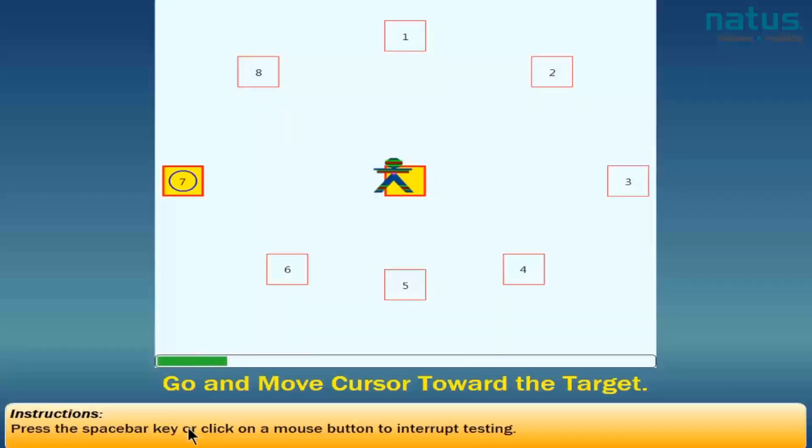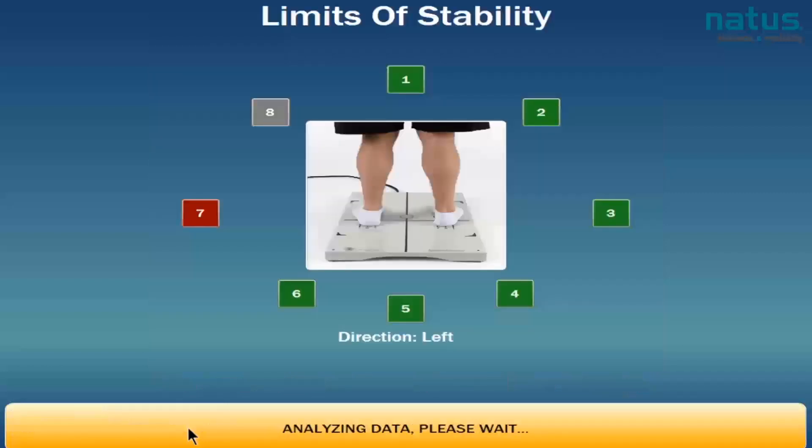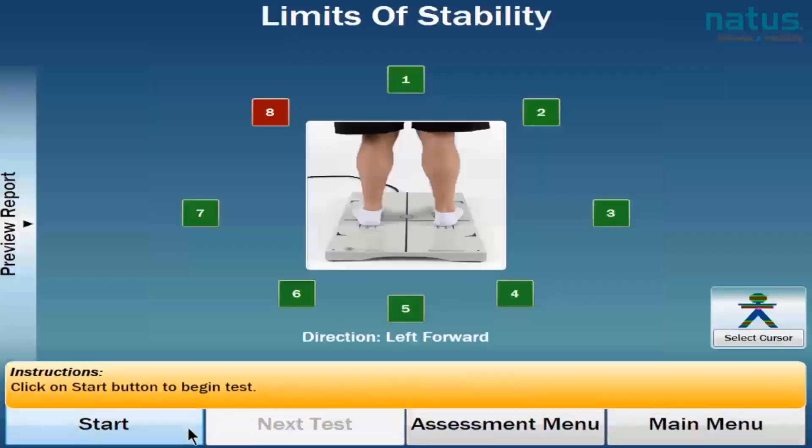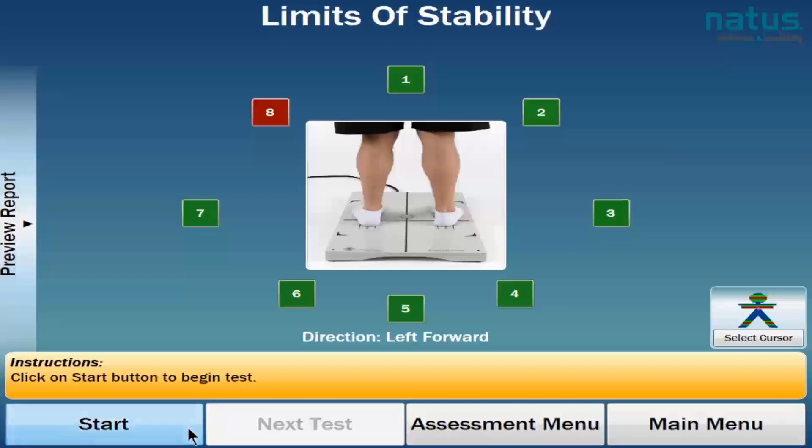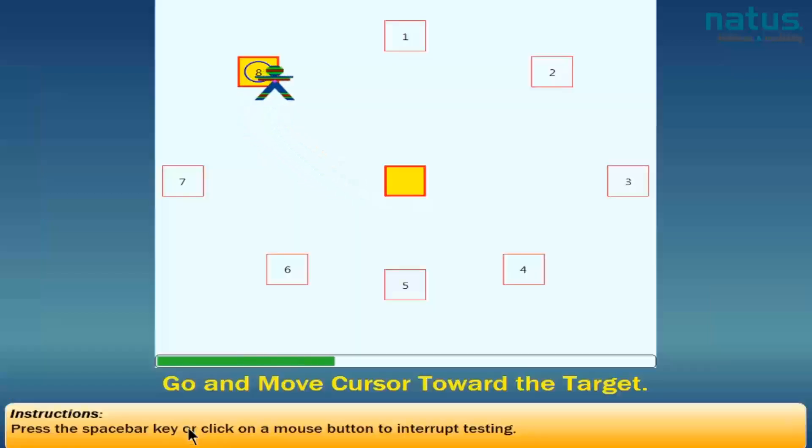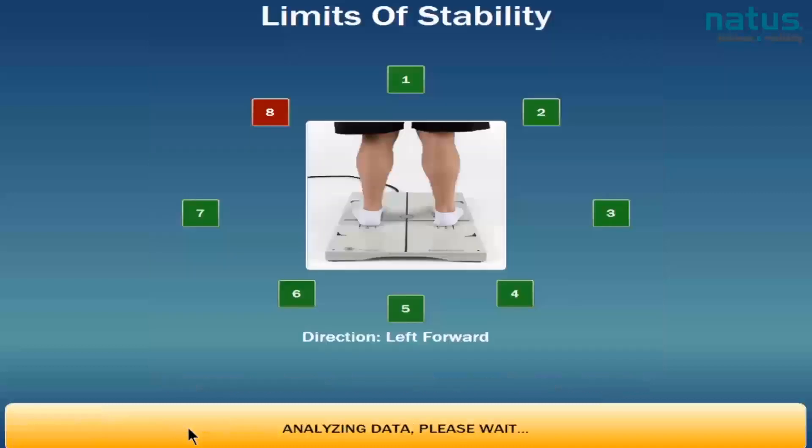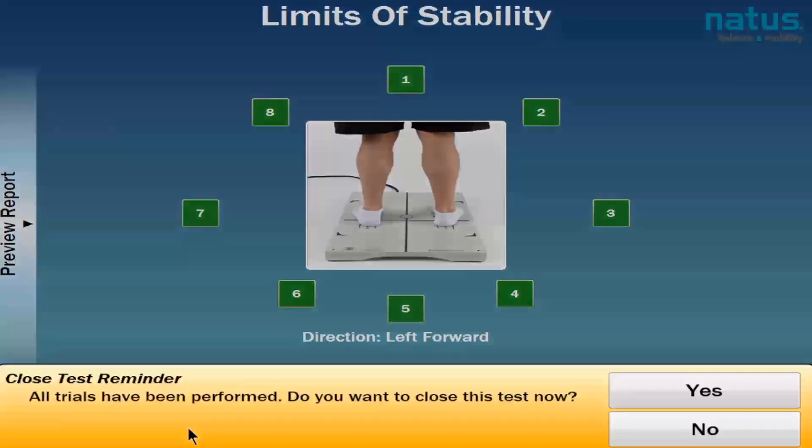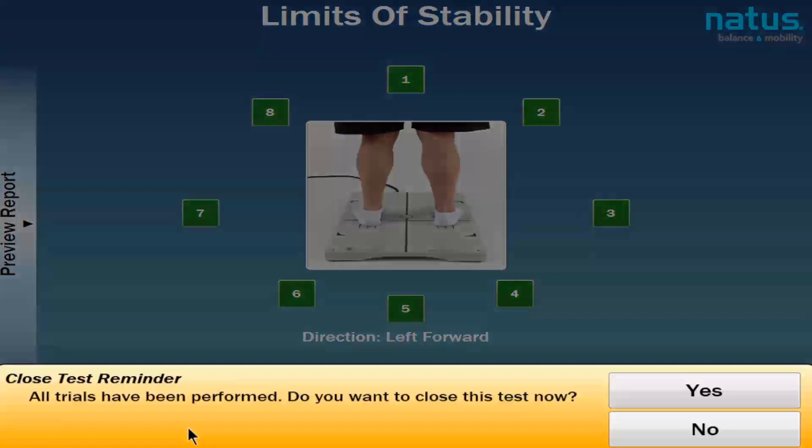Occasionally, you might get an error message that says your patient was not in the center square at the start of the trial, or they moved too quickly. And do you want to repeat that trial? If you see an error message that asks you if you want to repeat the trial, always say yes. You want to repeat the trial, because if you don't, you won't have a full data set, and you won't be able to analyze your data appropriately.